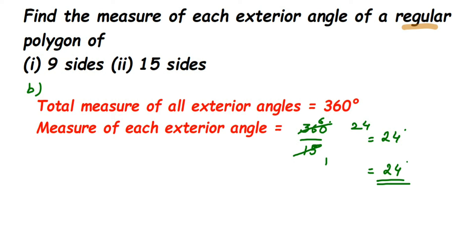So each exterior angle here is 24 degrees. That's it. So this is a simple question. Whenever they are going to ask you this type of question, you have to just divide the total exterior angle by the number of sides. That's it. I hope this question is clear. If you have a question or doubt, you can drop a comment. Thank you so much for watching.